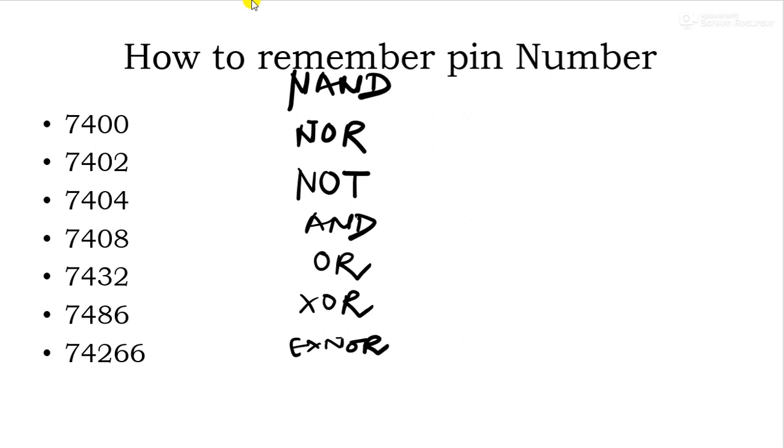So first consider universal gates, that is NAND and NOR. First consider NAND, then consider inverter that is NOT, then complement this NAND, that is AND, and complement of this NOR is OR, and the remaining two, XOR and XNOR. So we all know about these basic gates. Now start how to remember or how to write their pin number.